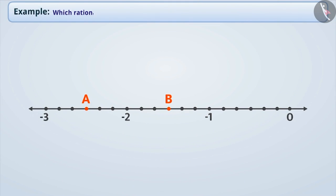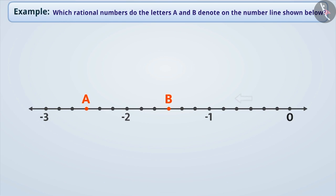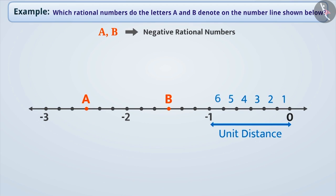Next example: which rational number do the letters A and B denote on the number line shown below? Both A and B are to the left of 0. Think! Absolutely right! This shows that both A and B are negative rational numbers. We can see that the unit distances are divided into 6 equal parts, so the denominator of both A and B will be 6.